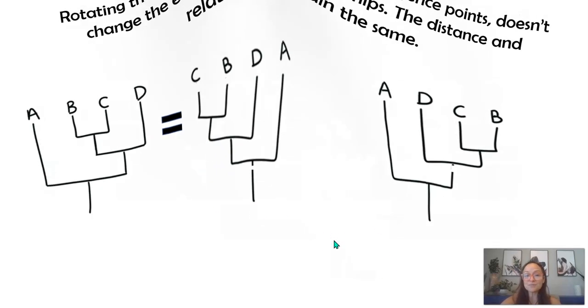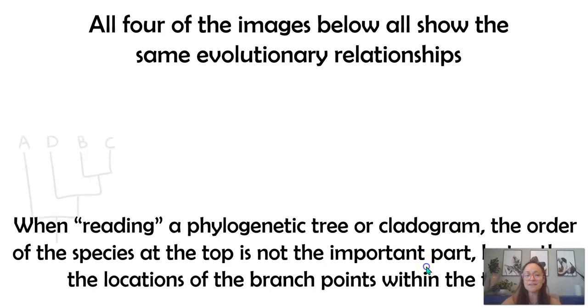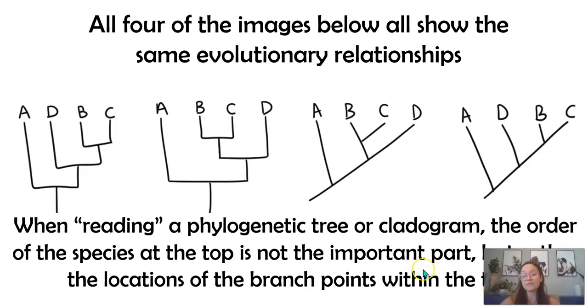As we move on, this is my last slide, I believe. If we look at these four different diagrams, they actually are all showing the same evolutionary relationships. When we look at B and C, you can see that they share the most recent common ancestor in all four of these diagrams. Then D is the next most closely related in all four of these. And then A. So, all four of these ways to display the information are equal and mean the same thing.